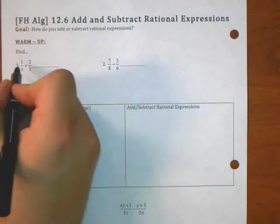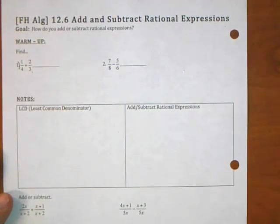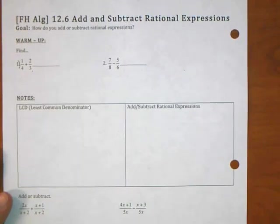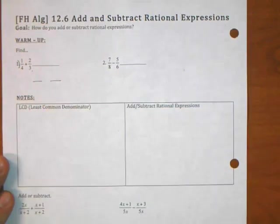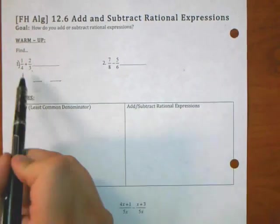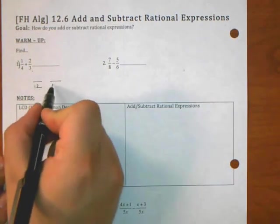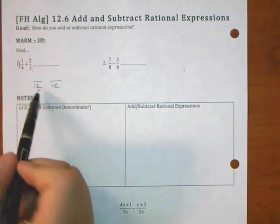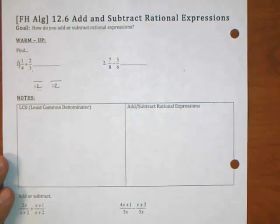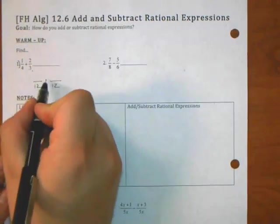So if I want to add one-fourth, this is problem number one. If I want to add one-fourth to two-thirds, how do I do that? You get a common denominator. So what's the smallest number that both four and three go into evenly? Twelve. Four goes into twelve, and three goes into twelve. And twelve is, in fact, the smallest number that this works for.